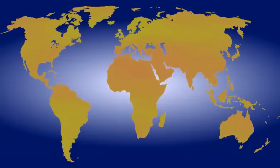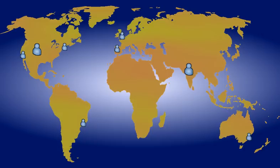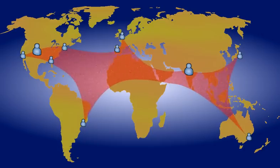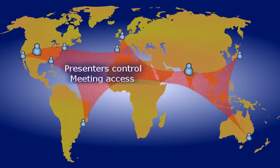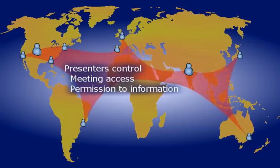For live meeting, roles are the same as those in conventional meetings. The meeting organizer schedules a meeting, one or more presenters can present information during the meeting, and attendees listen, watch, and participate. There is one difference, though: live meeting presenters control meeting access, grant permission to information, and control meeting interactions so the meeting runs smoothly.